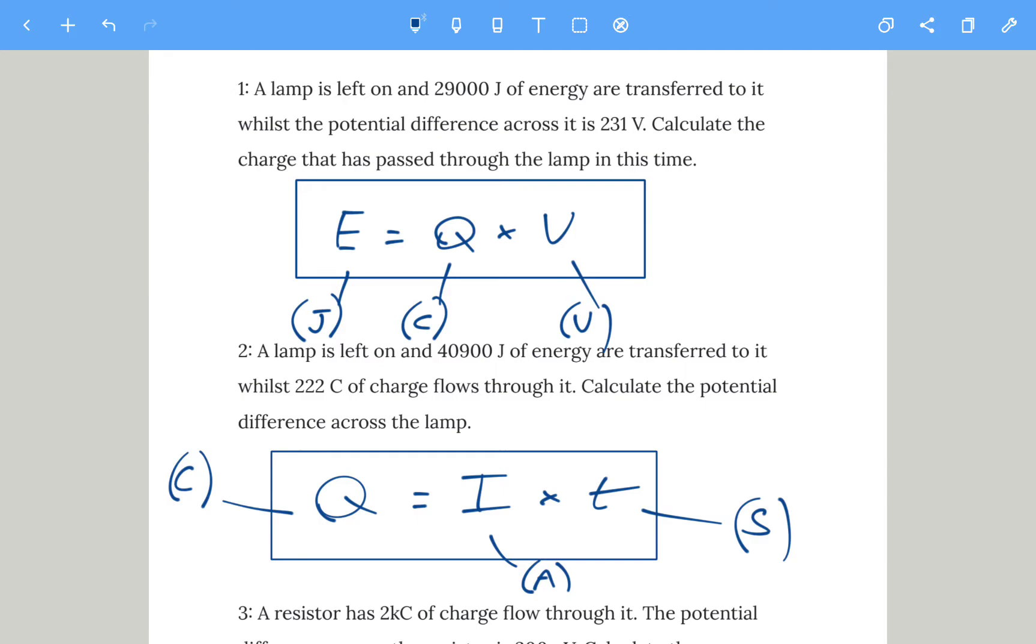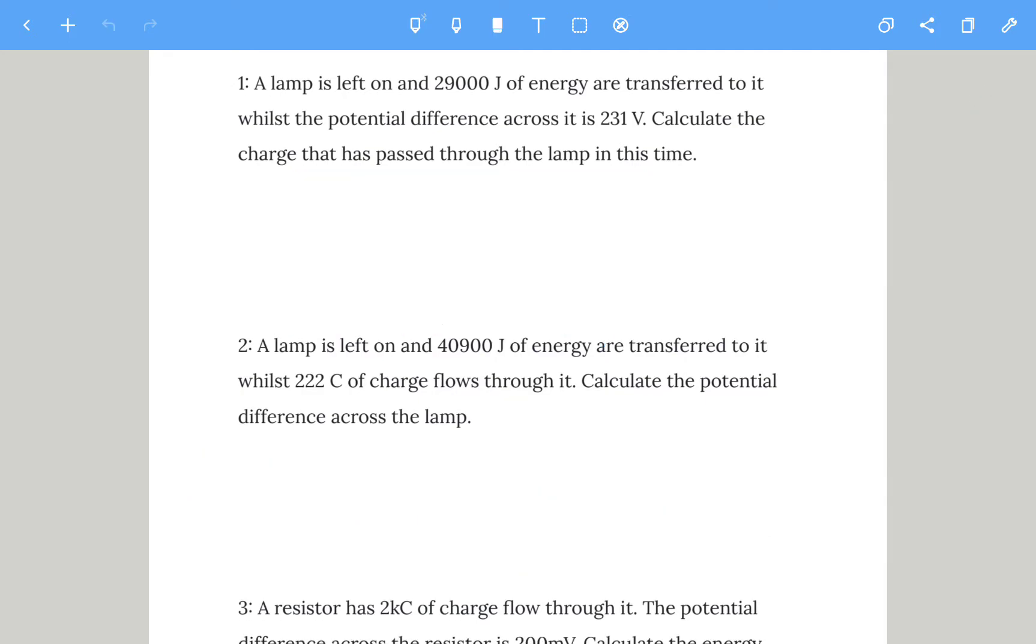These questions do progressively get more difficult. Let's start with the first one. You should pause and have a go at the first two questions. A lamp is left on and 29,000 joules of energy are transferred to it whilst the potential difference across it is 231 volts. Calculate the charge.